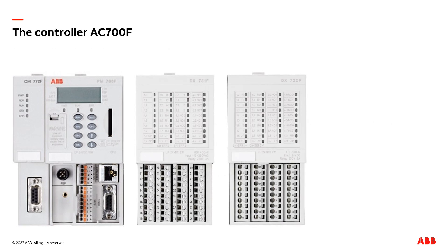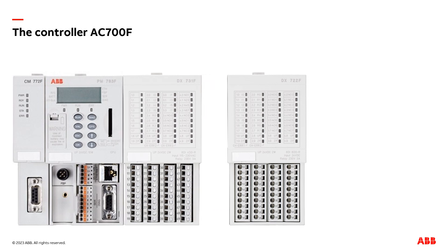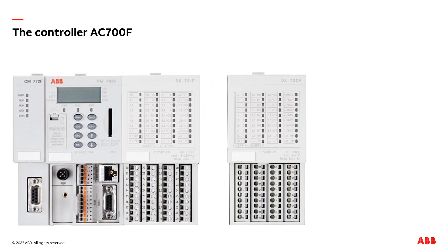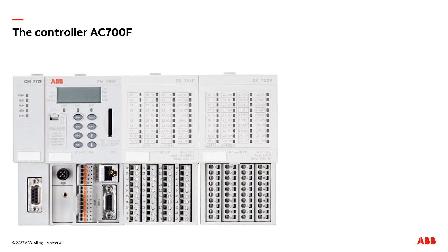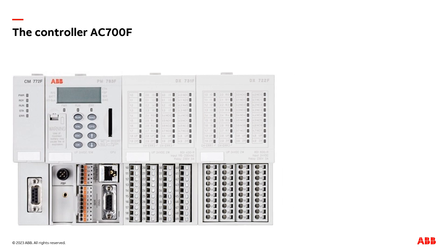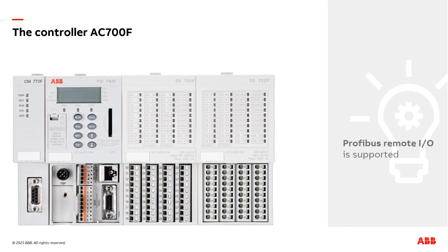The local S700IO can be directly plugged to the right side of the CPU module. Usage of these modules is very flexible, as they allow for mixing inputs and outputs inside one module, especially in smaller applications. This feature reduces the number of modules required.